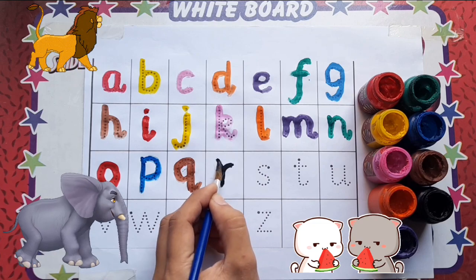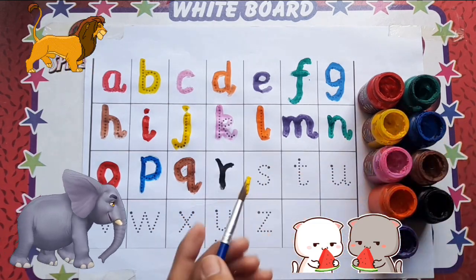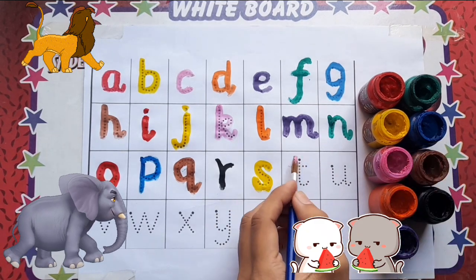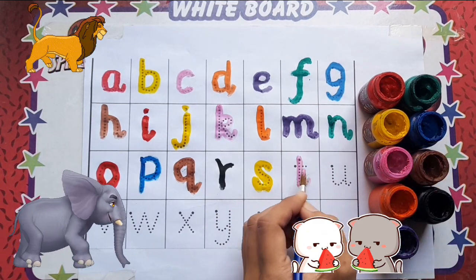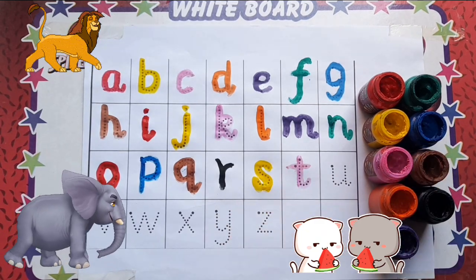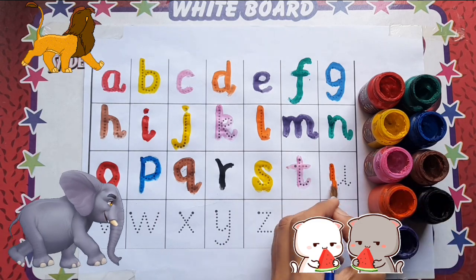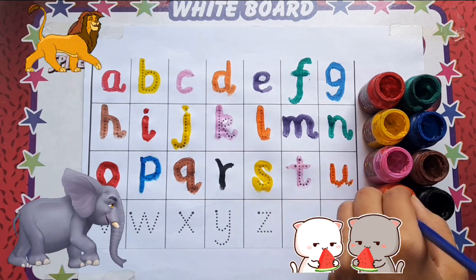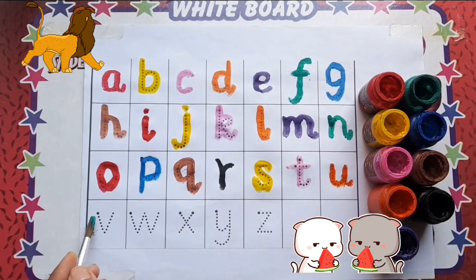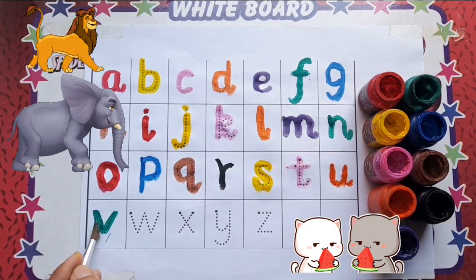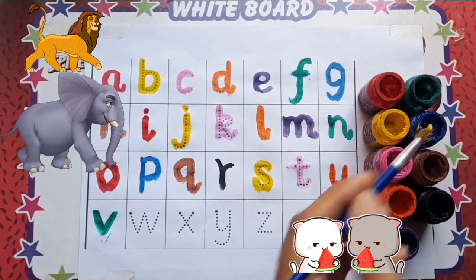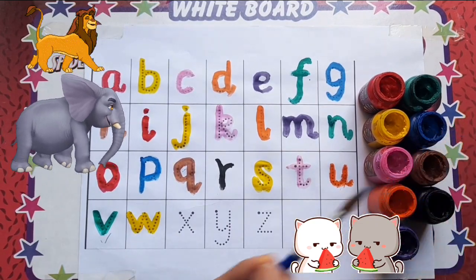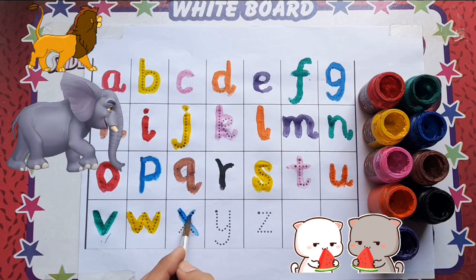Black color. R, R for rabbit. Yellow color. S, S for snake. Pink color. T, T for tiger. Orange color. U, U for umbrella. Dark green color. V, V for van. Yellow color. W, W for watch. Blue color.